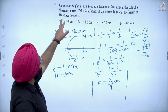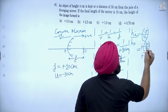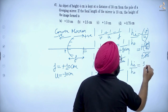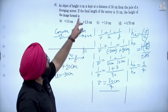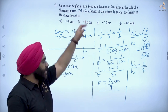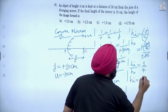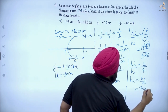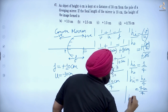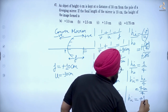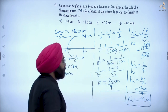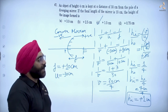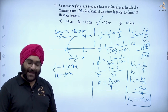Minus से minus cancel out हो गया, 30 से 30 cancel out हो गया। तो h_i / h_o = 1/4। Object की height 4 cm दी है, तो h_i = 4/4 = 1 cm। Image की height positive 1 cm आई है — option number C is the correct answer. Clear, thank you!